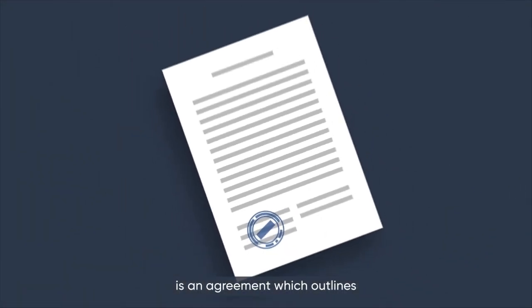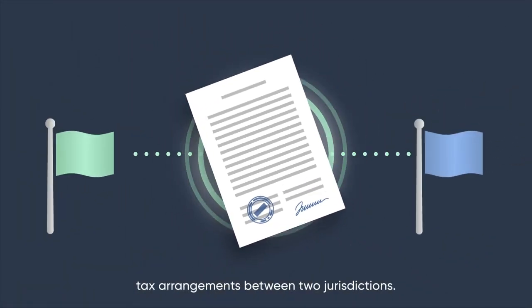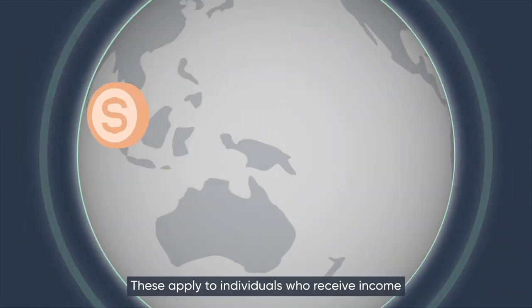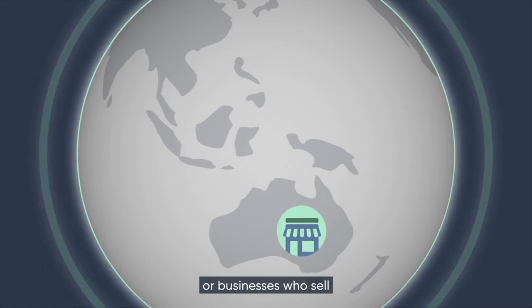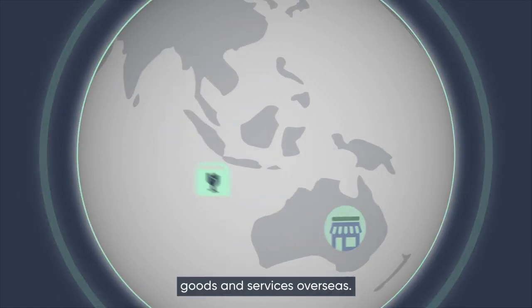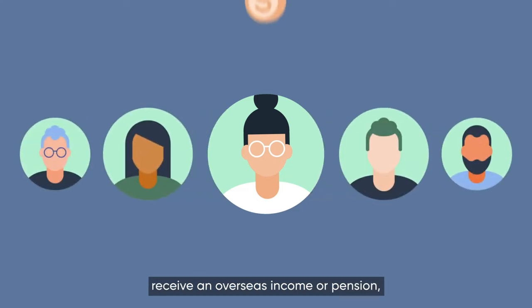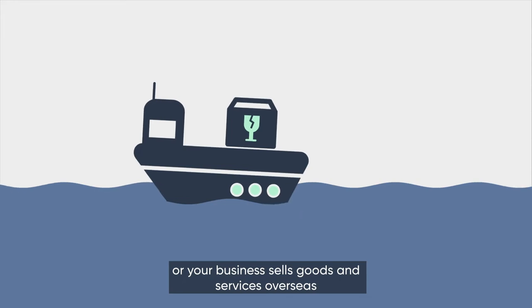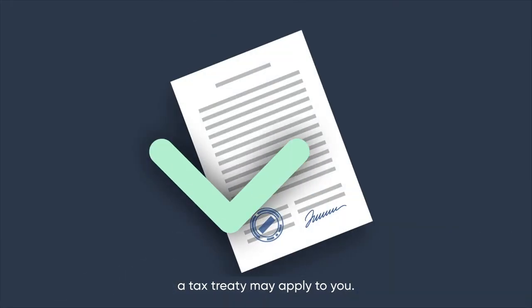A tax treaty is an agreement which outlines tax arrangements between two jurisdictions. These apply to individuals who receive income or pensions from overseas, or businesses who sell goods and services overseas. If you or a family member receive an overseas income or pension, or your business sells goods and services overseas, a tax treaty may apply to you.